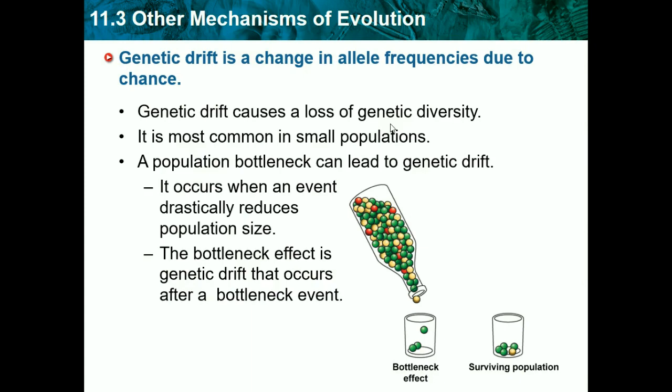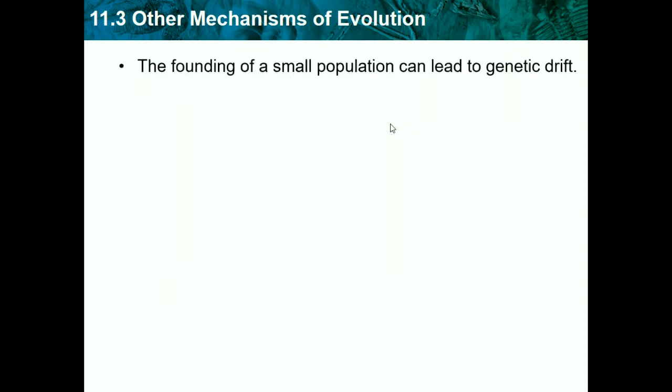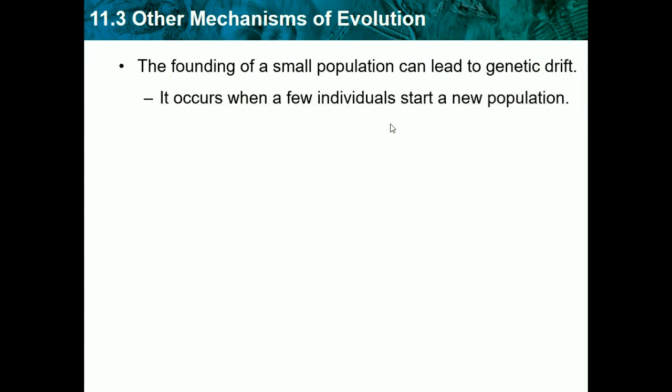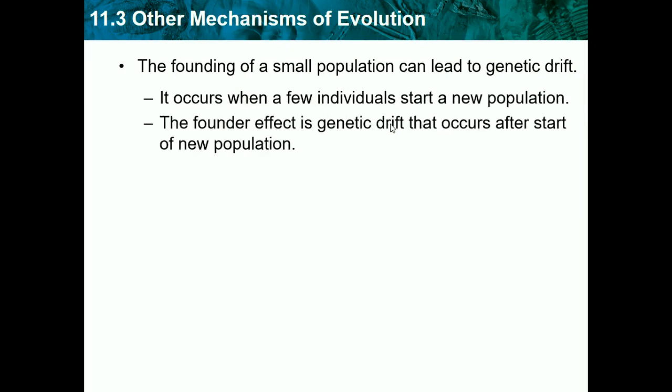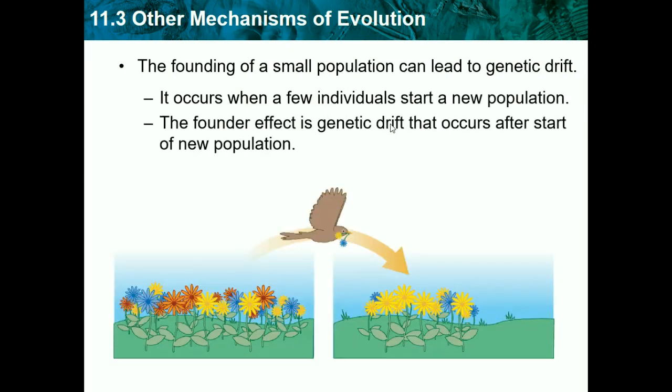Genetic drift occurs when an event drastically reduces the population size. The bottleneck effect is genetic drift that occurs after a bottleneck event — genetic drift and bottlenecking go hand in hand. The founding of a small population can also lead to genetic drift, and it occurs when a few individuals start a new population. This is called the founder effect.